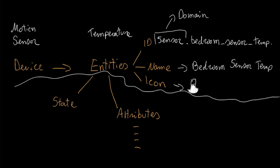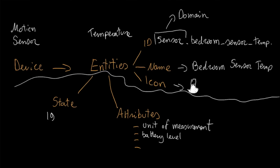What will change is the state and the attributes — these are things you can use as part of automations. In this example, the state will be a singular numeric value; for example where I live in the UK it will be 19 degrees Celsius. Celsius will be one of our attributes as the unit of measurement. We would also have, for example, a battery level attribute — this could be 99%. You can only have one value at a time with a state, whereas attributes can be many and can change.